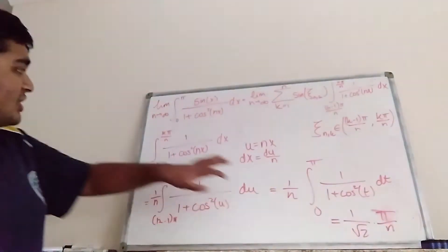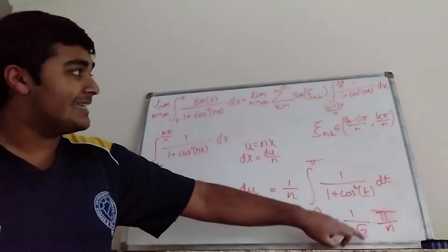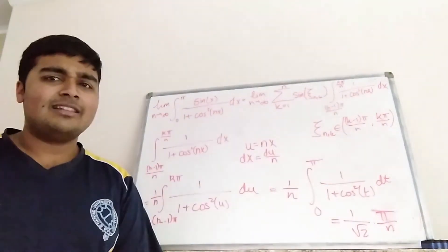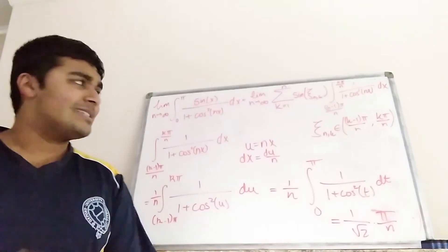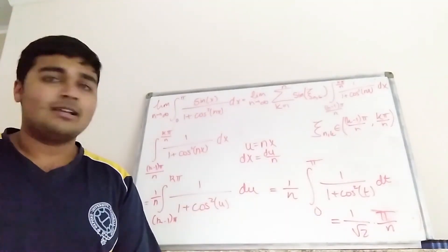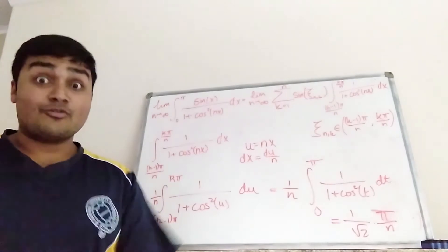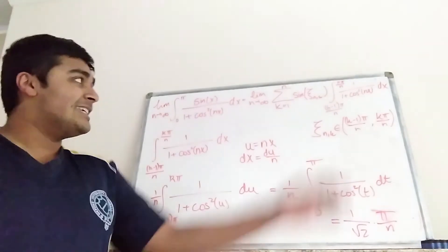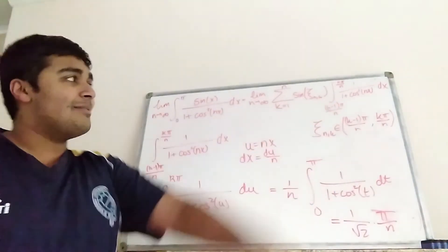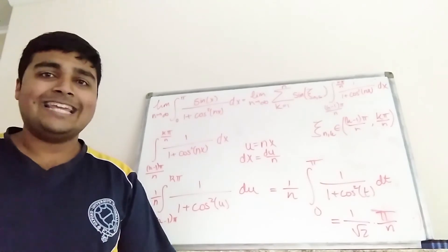Now what we're going to do is substitute this result back into our summation, and we'll see that it looks very similar to a Riemann sum. We'll use our knowledge of the Riemann integral to express this limit as an integral, which we can quickly evaluate.